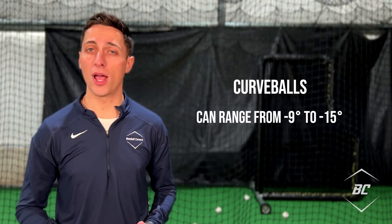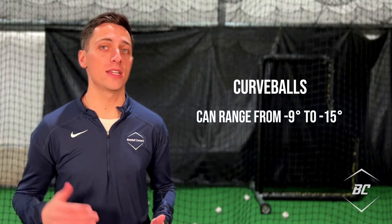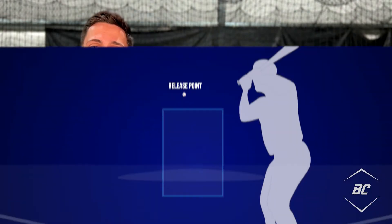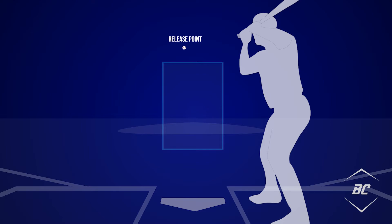Typical vertical approach angles for pitchers in the MLB range from negative 3.7 to negative 7.7 degrees for fastballs, while curveballs range from around negative 9 to negative 15 degrees. A negative value indicates the pitch crosses the plate at a lower height than it was released, and almost all pitches have a negative value because the pitch crosses the plate at a lower point due to the raised mound and gravity.